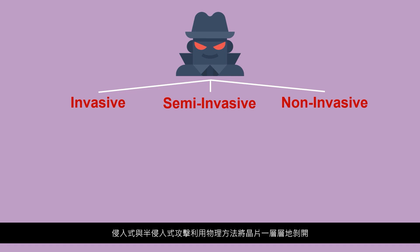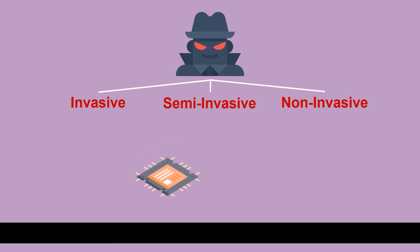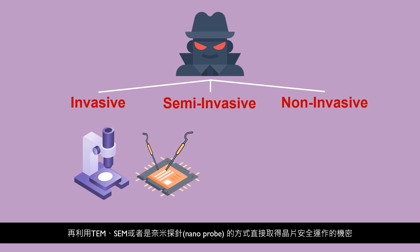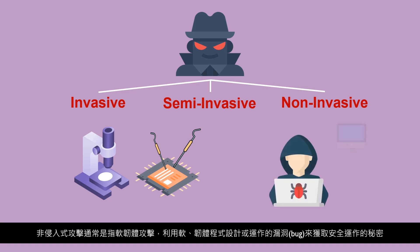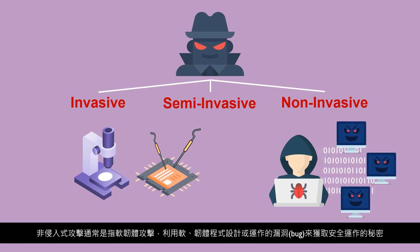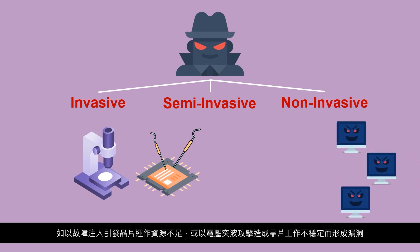Invasive and semi-invasive attacks use physical methods to delayer the SOC chip, and then use TEM, SEM, or nanoprobe to directly analyze the design and operation information of the physical circuit layer. Non-invasive attacks usually use electromagnetic waves, software, or firmware attacks. The chip is vulnerable when a fault is injected into the chip to cause a shortage of resources, or a voltage surge attack to cause an unstable chip operation.